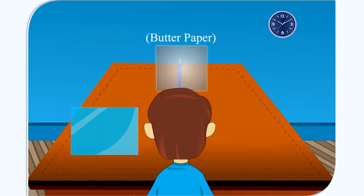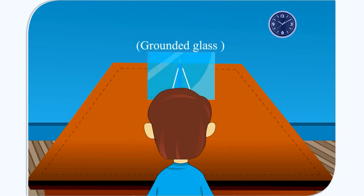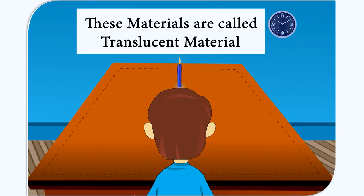Objects like butter paper, grounded glass and tissue paper allow only some light to pass through them and we cannot see clearly through them. Such materials are called translucent materials.